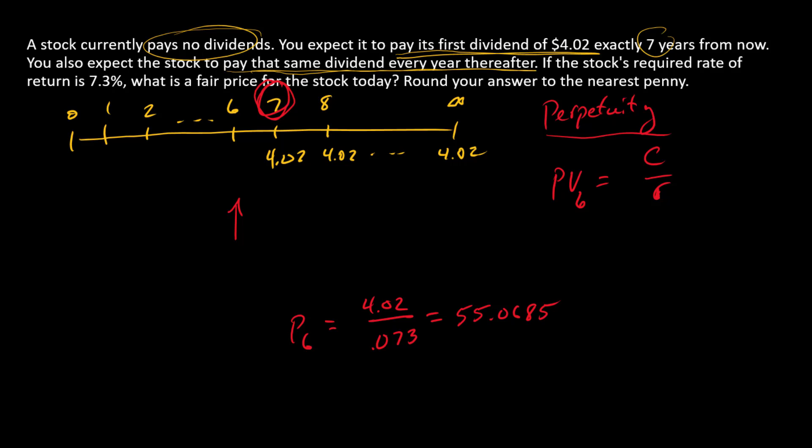This is not the answer. This is instead a price at this point in time, so it's the expected price at time six. What can we do now? We can rewrite this timeline.